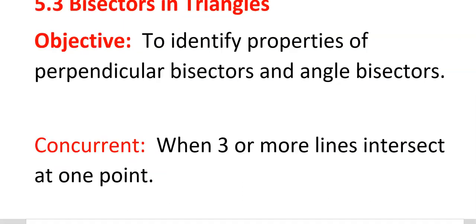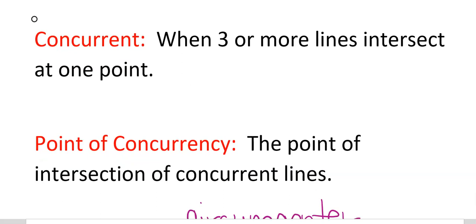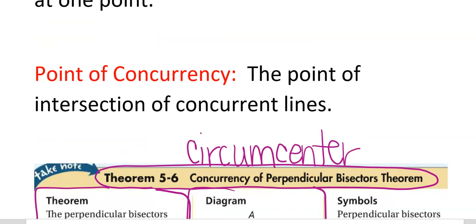When they talk about something being concurrent, that just means when three or more lines cross at the same point. That's a concurrent point. Point of intersection of concurrent lines is the point of concurrency, which is basically the same definition.